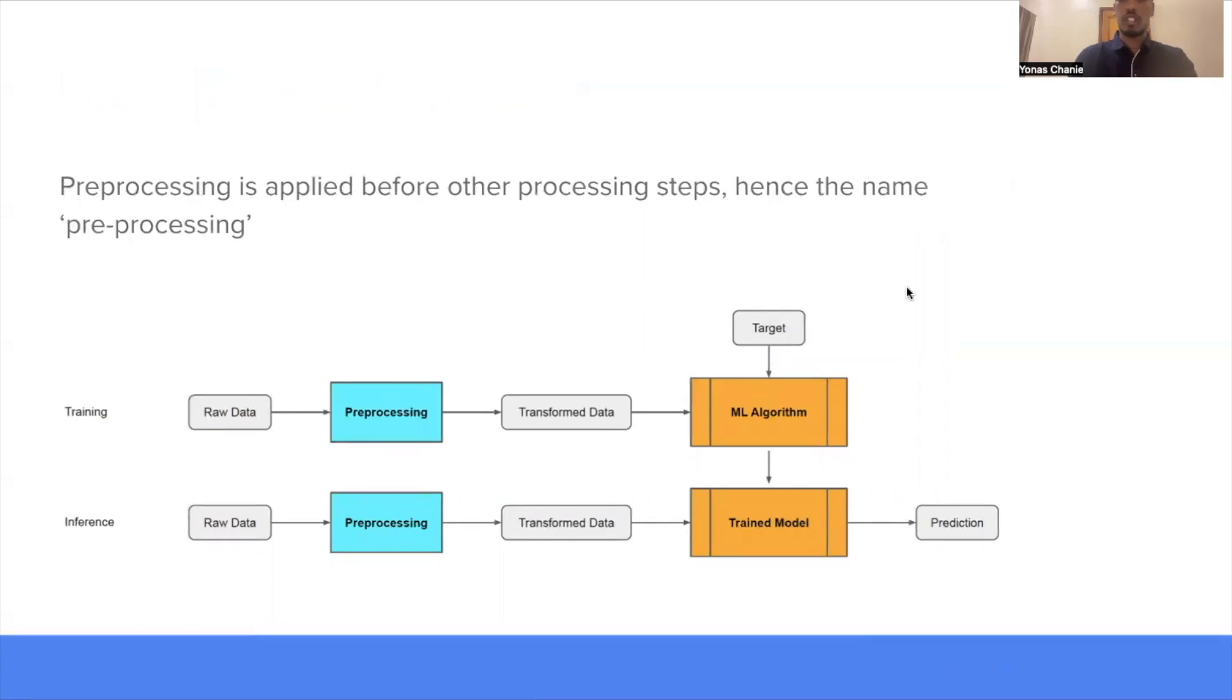To define data preprocessing in a more formal term, data preprocessing is a step in a machine learning pipeline that takes raw data as an input and transforms it to make it suitable for consequent steps such as training a model. So preprocessing is applied before other processing steps, hence the name preprocessing. For example, as shown in the figure below, this preprocessing step comes before the raw data, before it's passed to other tasks. In this case, training a machine learning model.